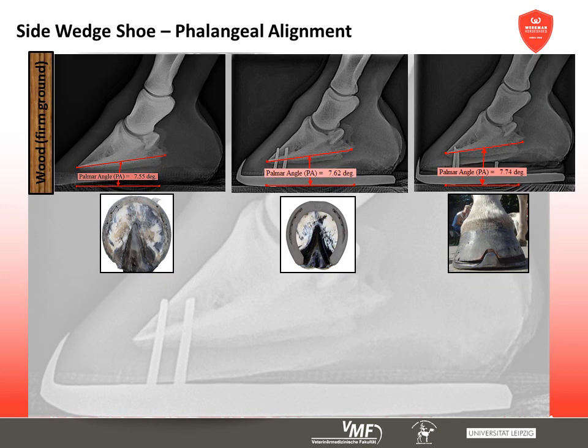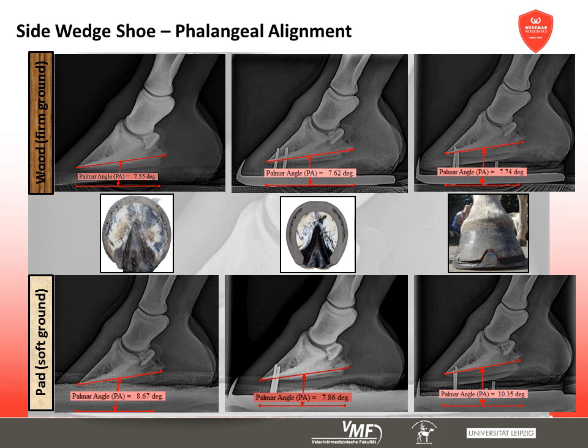On hard ground the side wedge shoe shows no effect on the dorsopalmar alignment of the coffin bone. On soft ground the wedge prevents the hoof from sinking into the ground, which causes a slightly steeper orientation of the hoof in comparison to a barefoot hoof or the application of a standard horseshoe.